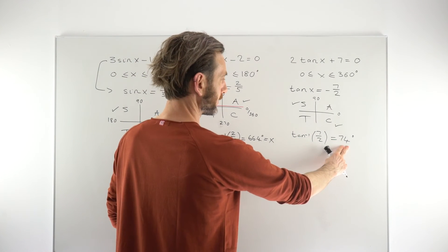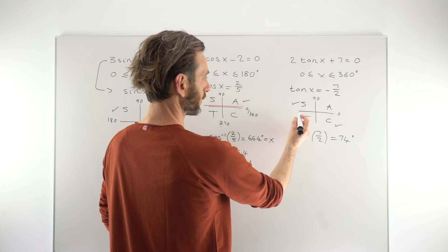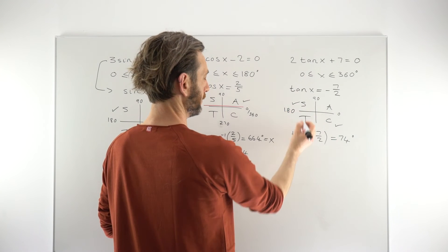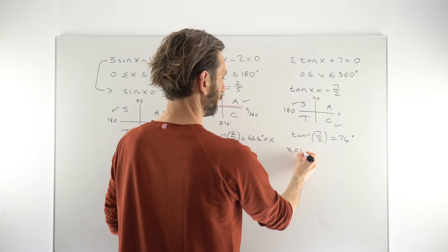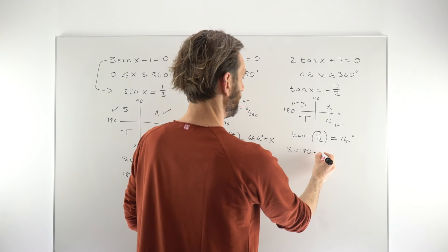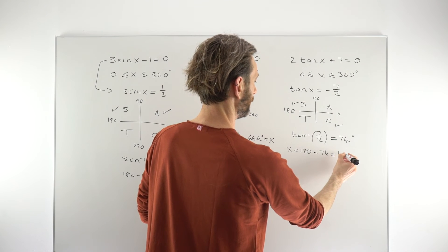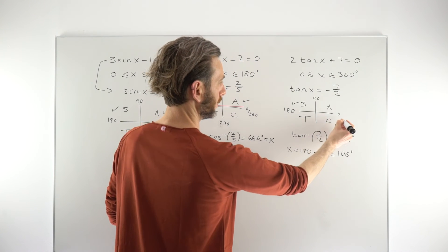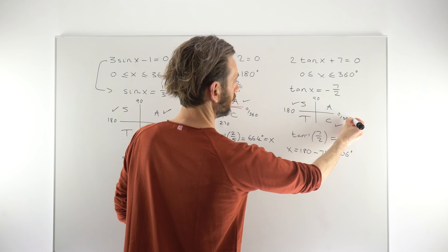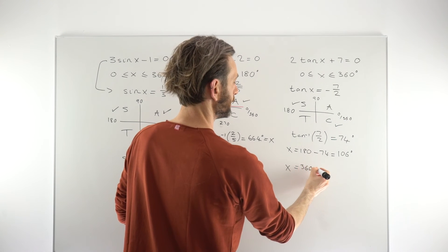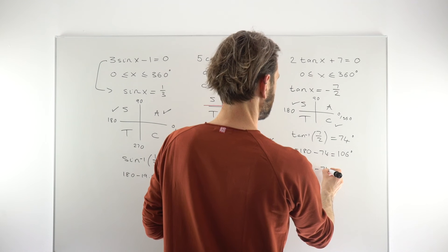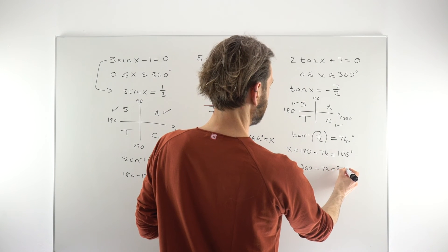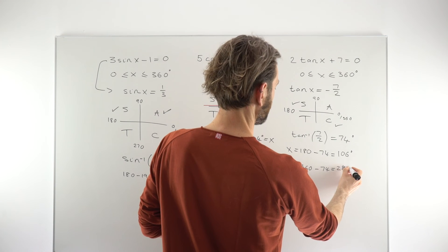Because 74 is a reference number and our actual solutions are in the second and fourth quadrants, we get x = 180 − 74 = 106 degrees for the second quadrant solution, and x = 360 − 74 = 286 degrees for the fourth quadrant solution.